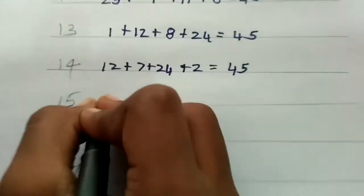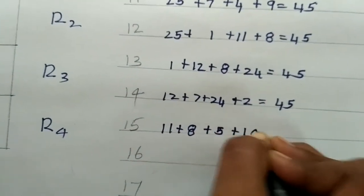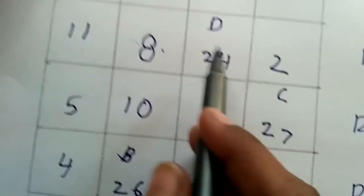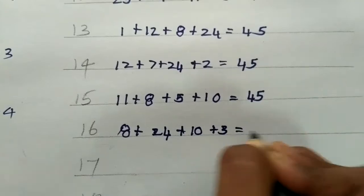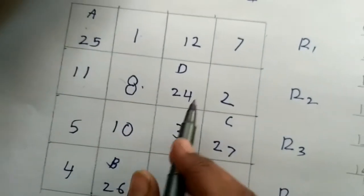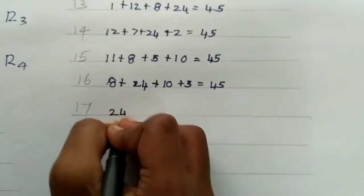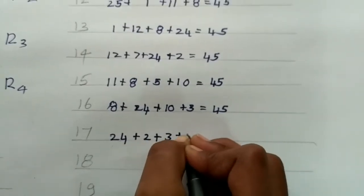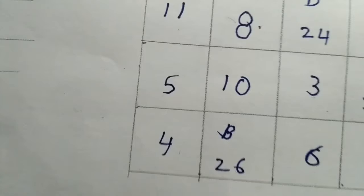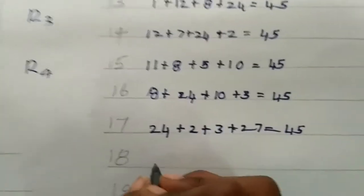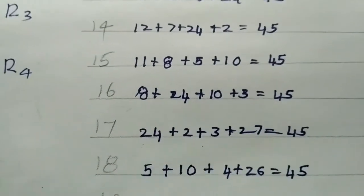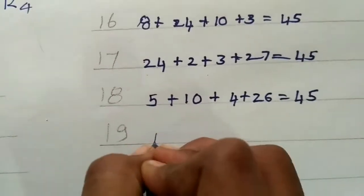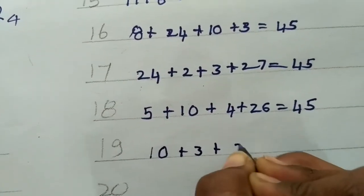Again: 11 plus 8 plus 5 plus 10 equals 45. Again: 8 plus 24 plus 10 plus 3 equals 45. Again: 11 plus 4 plus 6 equals 45. Again: 10 plus 3 plus 26 plus 6 equals 45.